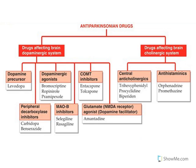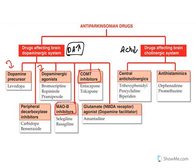Now see the classification. Either enhancing dopamine effects or reducing acetylcholine. How do we enhance dopamine effects? By using drugs like a dopamine precursor, a dopamine agonist. Dopamine metabolizing enzymes — catechol-O-methyltransferase and monoamine oxidase — when you inhibit these metabolizing enzymes, dopamine levels are increased. Dopamine facilitators which enhance the release of dopamine. And one more enzyme inhibitor: peripheral decarboxylase inhibitor. We will see them one by one.